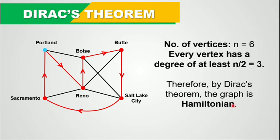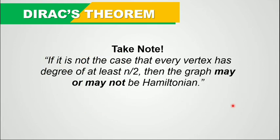One of the limitations of Dirac's Theorem is that if it is not the case that every vertex has degree of at least n over 2, then the graph may or may not be Hamiltonian. In other words, if the conditions of Dirac's Theorem are not met, the graph could still be Hamiltonian or not. Dirac's Theorem will not tell us if the graph is not Hamiltonian — it only helps us determine if a graph is Hamiltonian, but not the other way around.